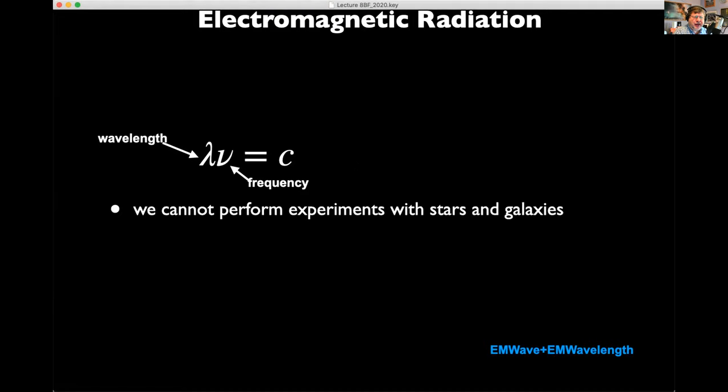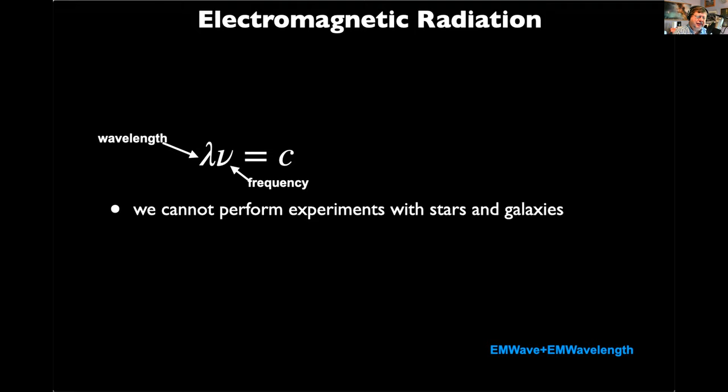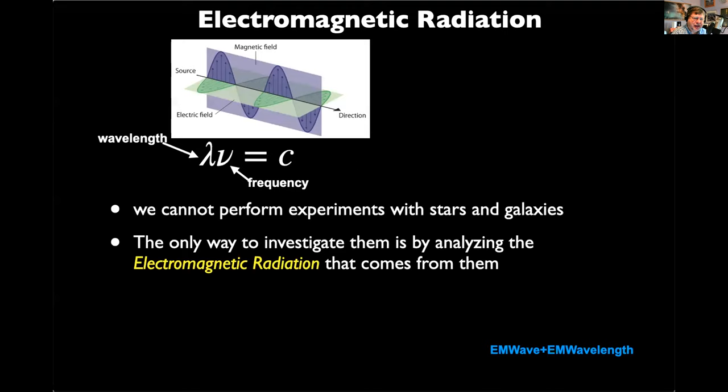We can't perform experiments with stars and galaxies. In elementary school, science is described as: form a hypothesis, perform an experiment, and prove or disprove it. That doesn't work with astronomy because we can't do experiments with stars and galaxies, but we can observe them with electromagnetic radiation. We use the term electromagnetic because it's an electric field oscillating with a magnetic field, and both of those fields move at the speed of light.